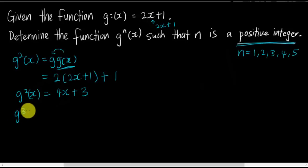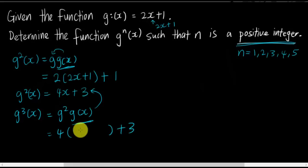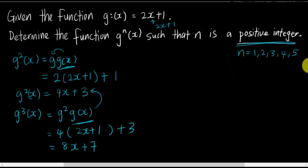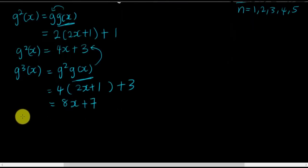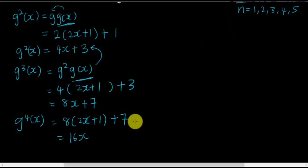Then I try to do g³(x). g³(x) basically means substituting g(x) into g²(x). So I substitute 2x plus 1 into the x of g²(x), giving me 4(2x plus 1) plus 3, which is 8x plus 4 plus 3, equals 8x plus 7. Similarly for g⁴(x), substituting g(x) into g³(x) gives 8(2x+1) plus 7, which is 16x plus 8 plus 7, equals 16x plus 15.